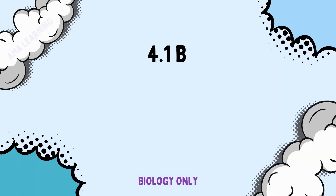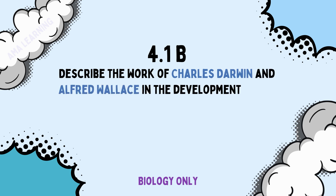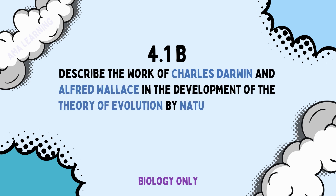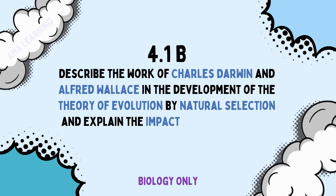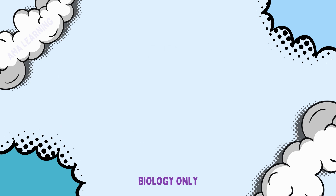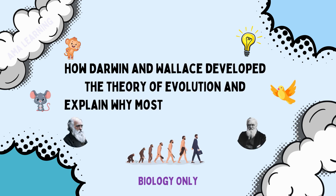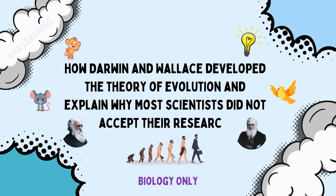Specification point 4.1.B: describe the work of Charles Darwin and Alfred Wallace in the development of the theory of evolution by natural selection, and explain the impact of these ideas on modern biology. This is a biology-only specification point. To successfully answer any GCSE questions linked to this topic, you will need to state how Darwin and Wallace developed the theory of evolution and explain why most scientists did not accept their research.